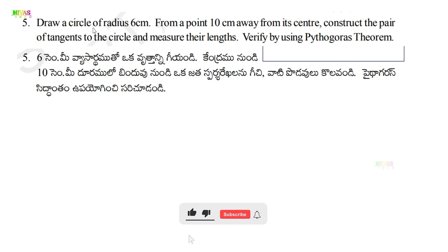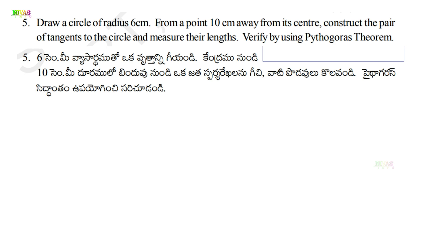Next question, number five: Draw a circle of radius 6 centimeters. From a point 10 centimeters from its center, construct the pair of tangents to the circle and measure their lengths. Verify by using the Pythagoras theorem. First, we draw a circle of 6 centimeters radius, then we draw a point at 10 centimeters distance, and draw a right bisector to construct the tangents.